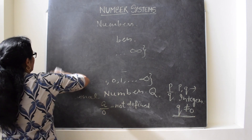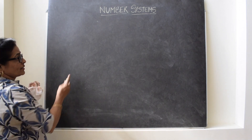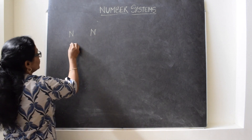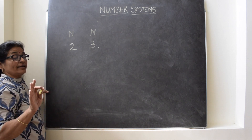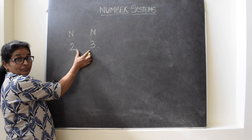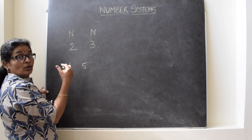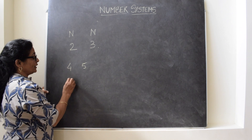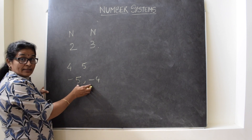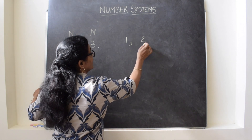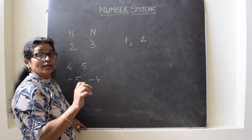Now after these rational numbers, if we notice how many numbers are between two numbers — if you take two consecutive natural numbers, you will not find any natural number between them. Similarly, if you take any two consecutive whole numbers, you will not find any whole number between them. Similarly, if you take two consecutive integers, there is no integer between them. But if you find two rational numbers, there are infinite rational numbers between them.